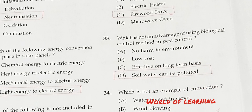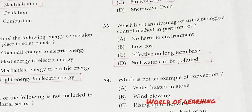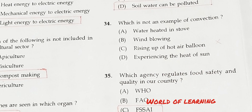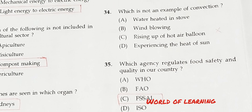Question 32: Which is not an advantage of using the biological control method in pest control? Option A: No harm to the environment. Option B: Low cost. Option C: Effective on a long-term basis. Option D: Soil and water can be polluted. Correct answer is Option D, soil and water can be polluted.